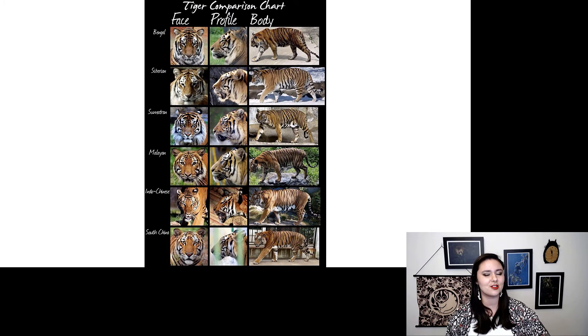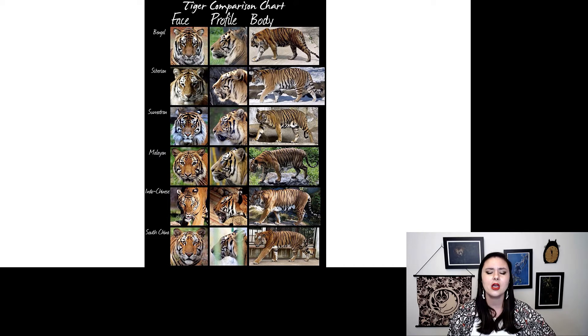So let's take tigers as an example. So here we have a couple different subspecies: Bengal, Siberian, Sumatran, Malayan, Indo-Chinese, and South China tiger. They're all obviously tigers. But if you look closely, let's look at their faces first. They have slight different variations. The Sumatran tiger has this gorgeous beard here. And some of them are slightly different shades of orange.